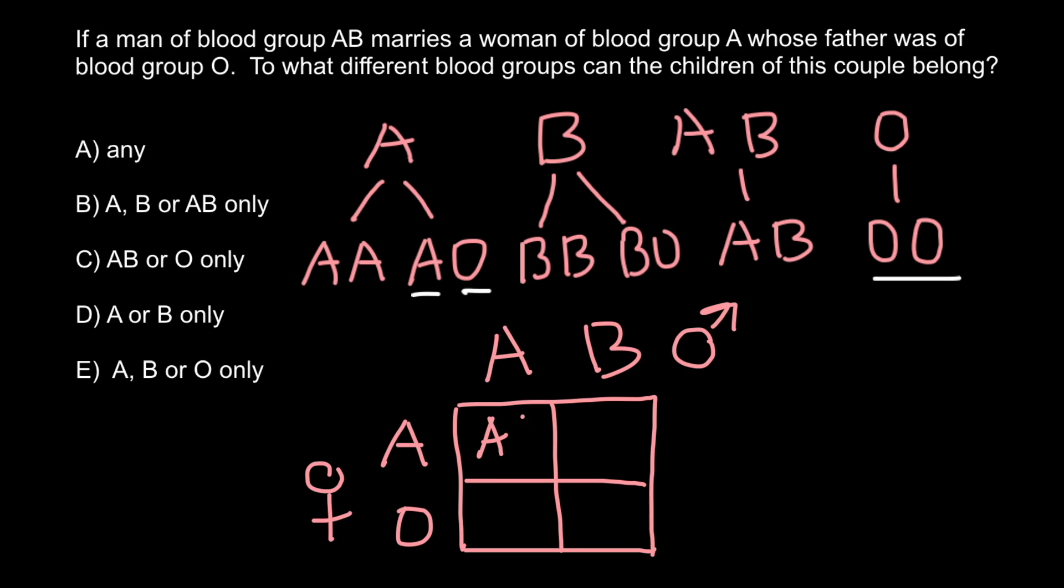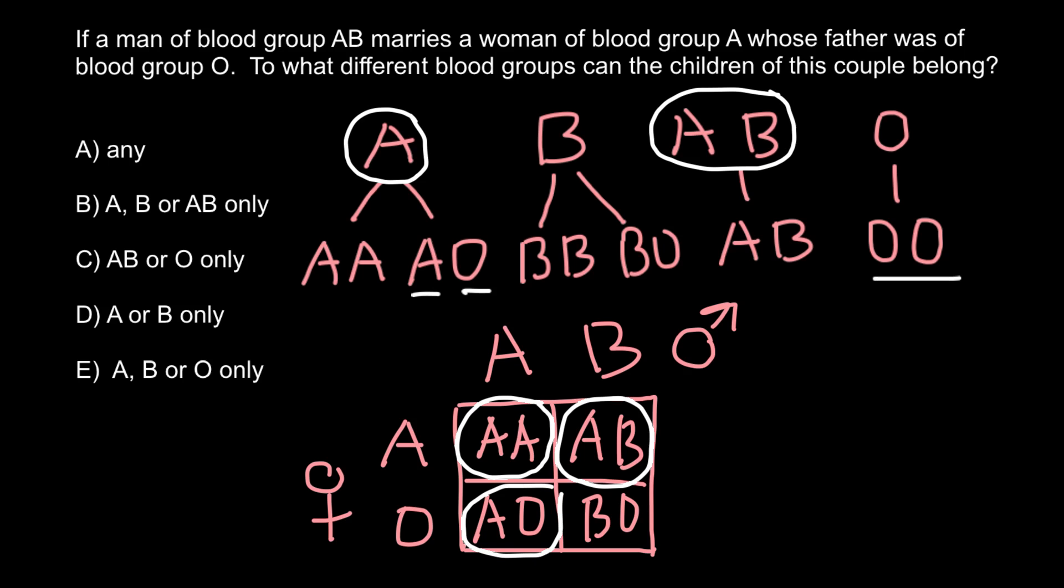So possible genotypes in their progeny would be AA, AB, AO and BO. This blood group is blood group A, this blood group phenotypically is blood group AB, and this blood group and this blood group is also blood group A. We already circled this blood group.